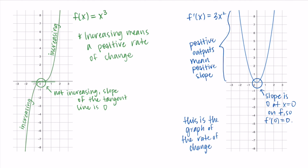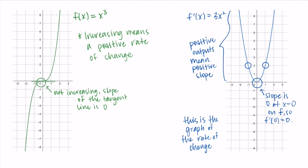To make one more connection: at x = −1 and x = 1 on the derivative, both points have the same output of 2. This means the slope of f is 2 at both x = −1 and x = 1. Looking back at the graph of f, this makes sense — the function is symmetric about the origin, so the slope at x = −1 equals the slope at x = 1, and we see this reflected in the graph of the derivative.